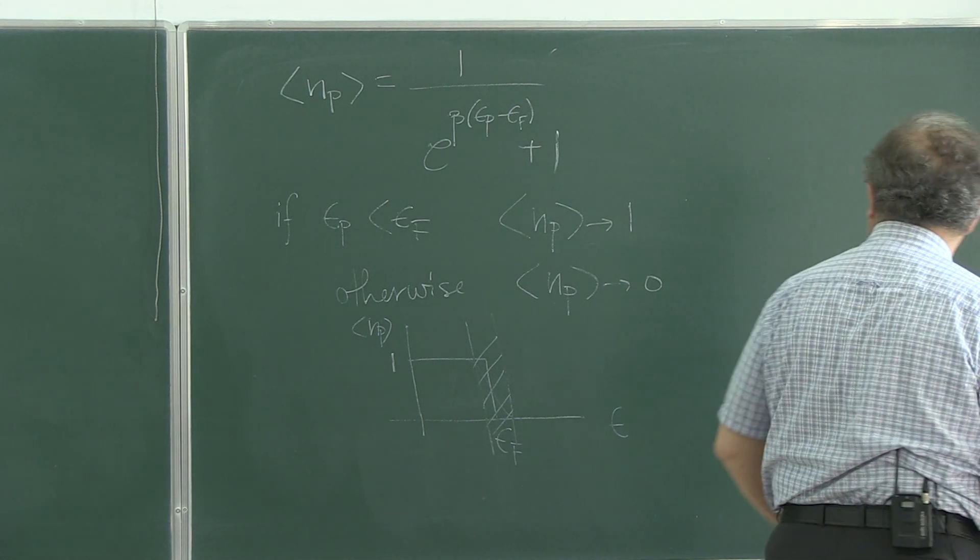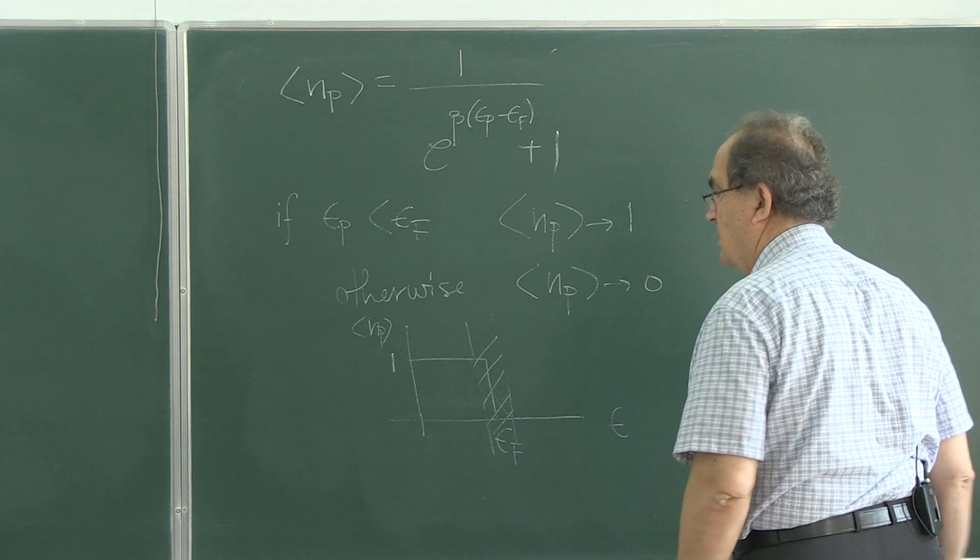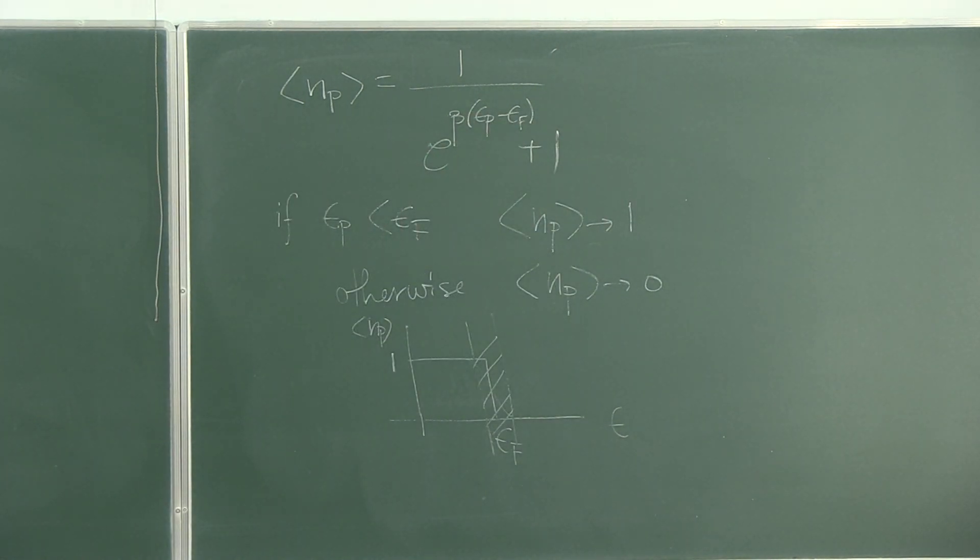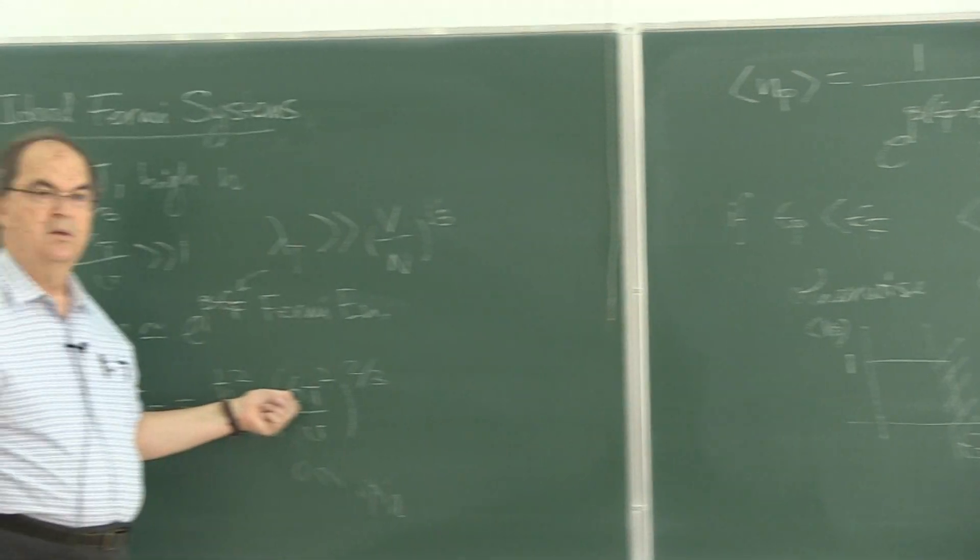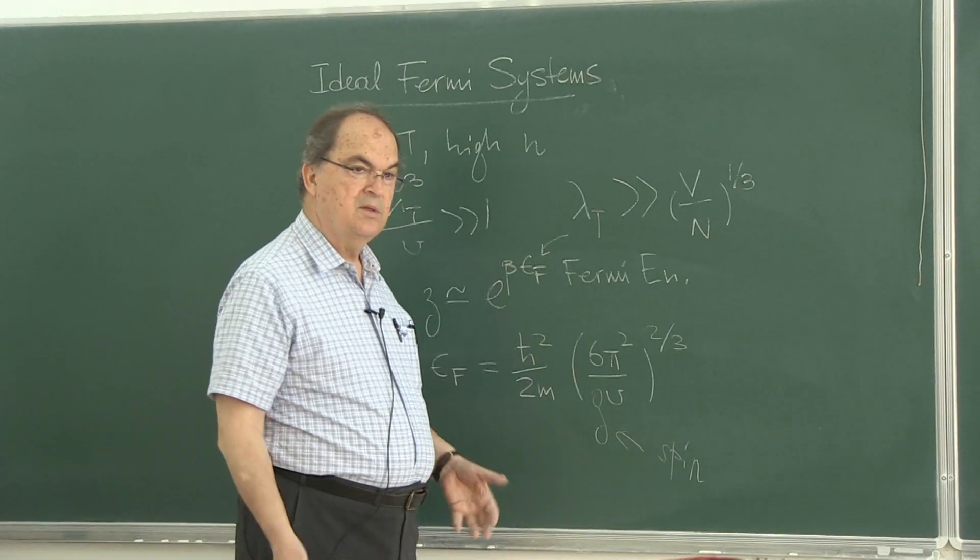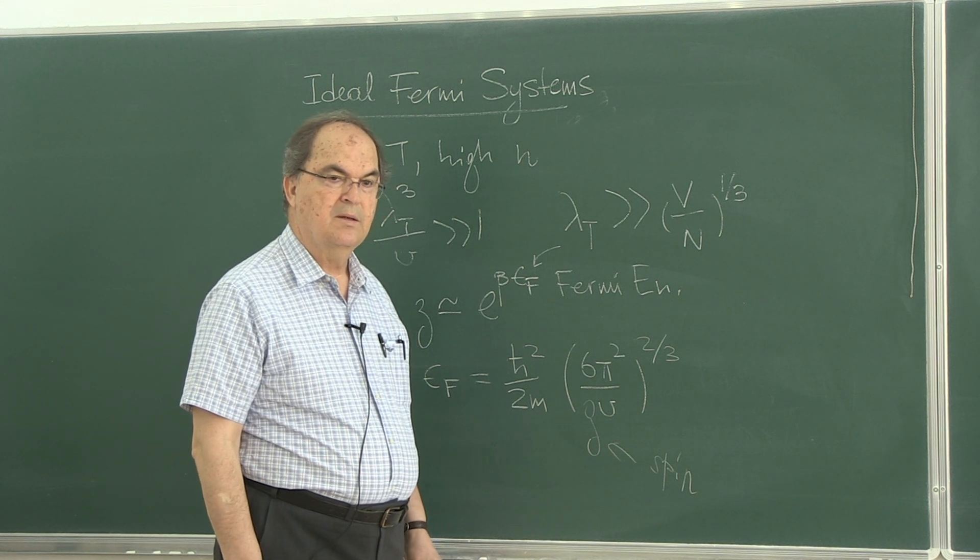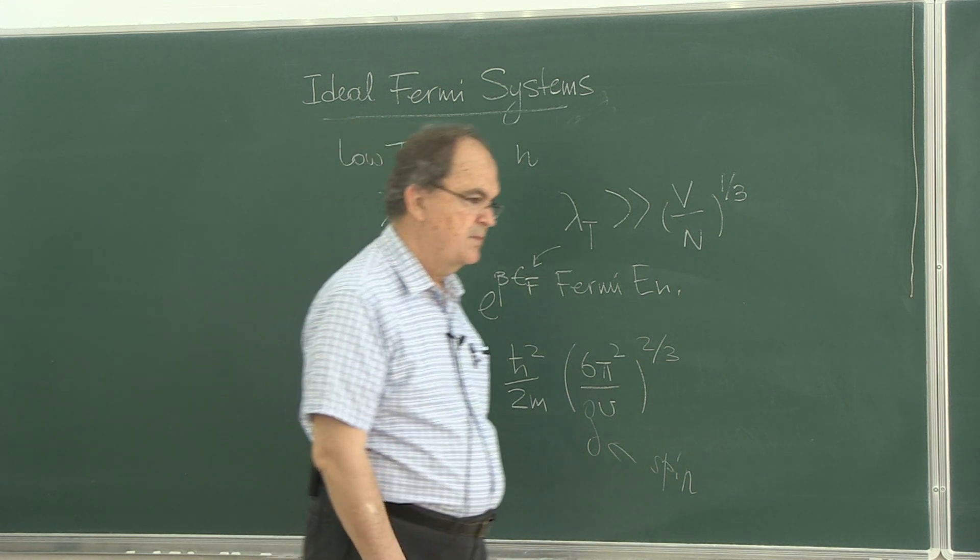So, that's the low temperature thing. If you take spin into account, you have to divide that by g-factor, takes care of spin. If you have electrons, g is two, that number becomes three. In getting this, we didn't take spin into account explicitly.